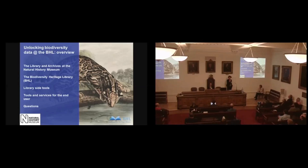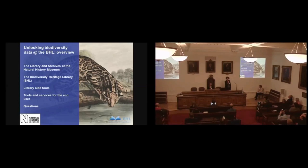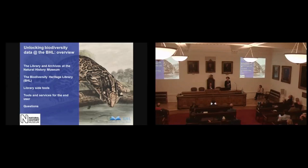Very briefly, an overview of what we're going to talk about today. I'm going to very quickly tell you a little bit more about the Library and Archives collections, what we have there. Then I'm going to hand over to Alison who's going to talk a little bit more about BHL, some facts and figures about the structure, and also the library side digital tools that we use at the museum to get our content into BHL. And then I'm going to finish up by looking at some of the end user tools and services that are available to allow people to get content back out of BHL in a way that they want to use it.